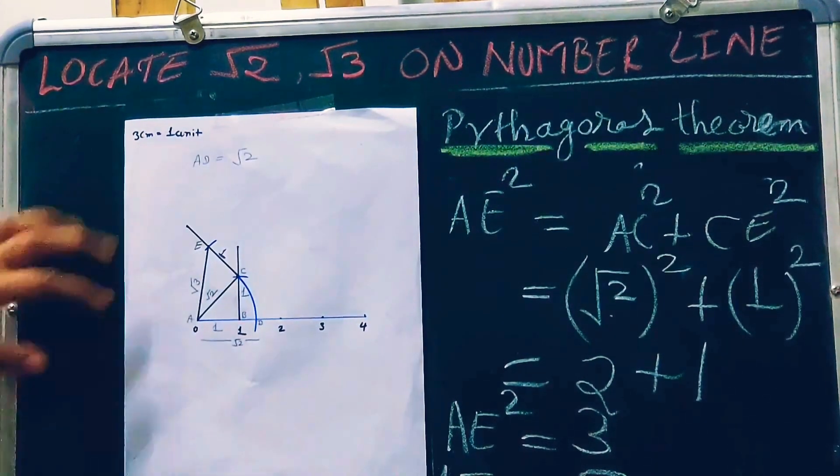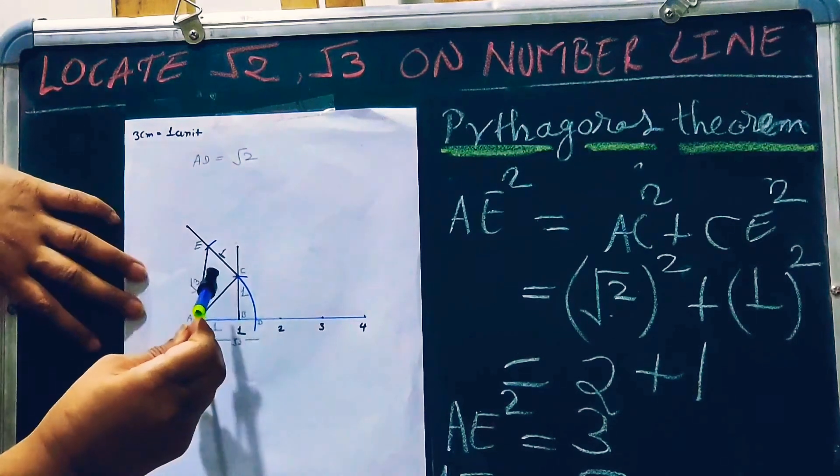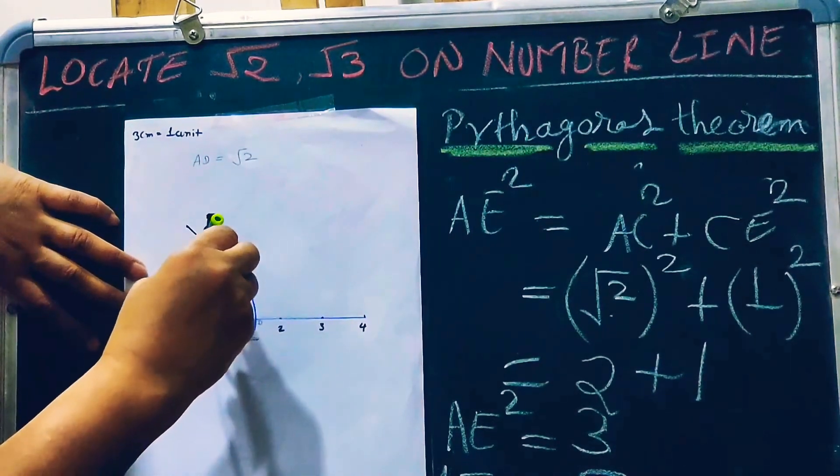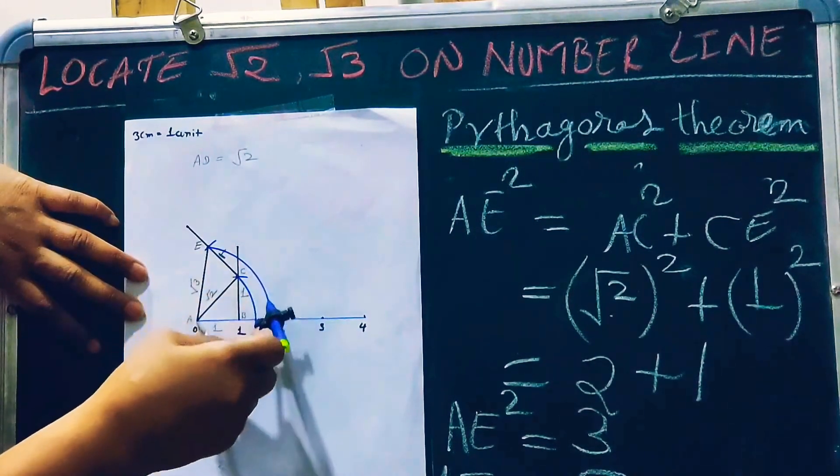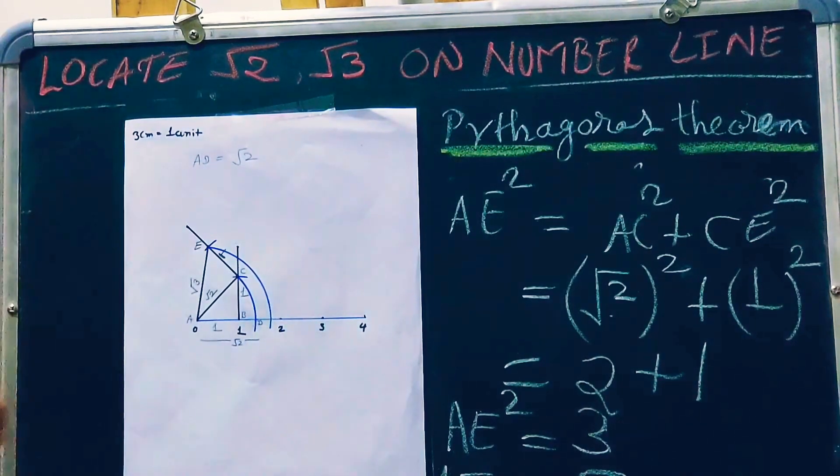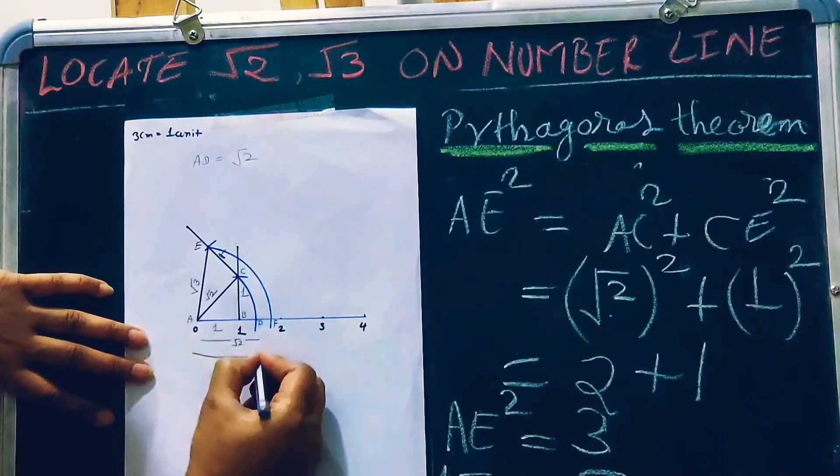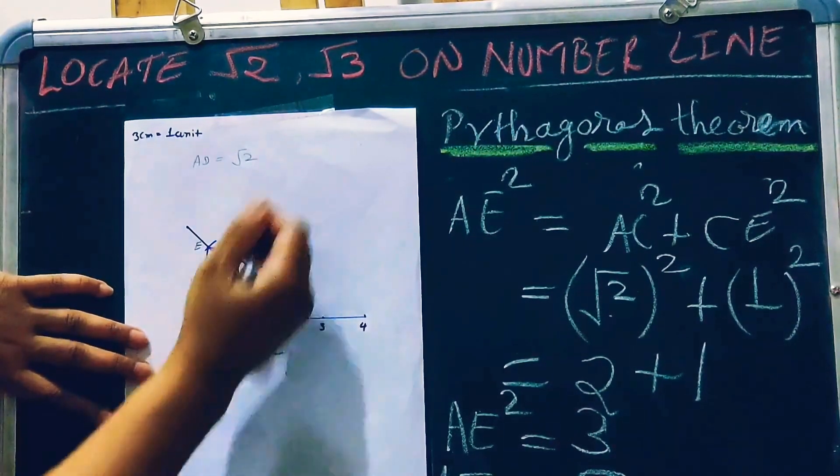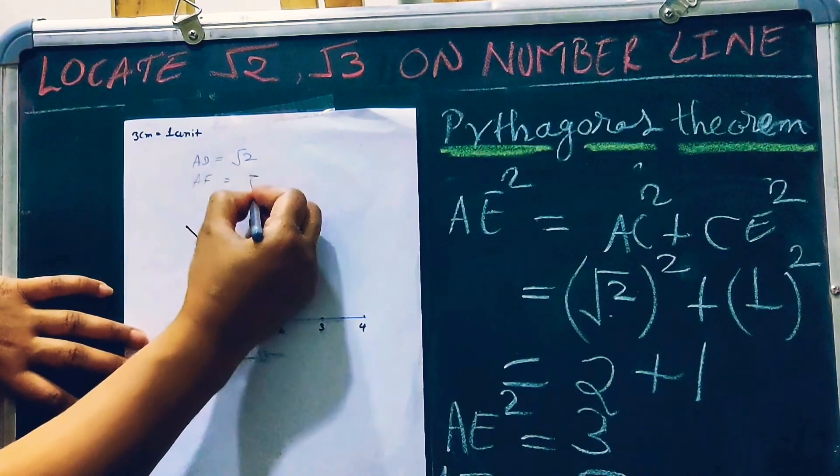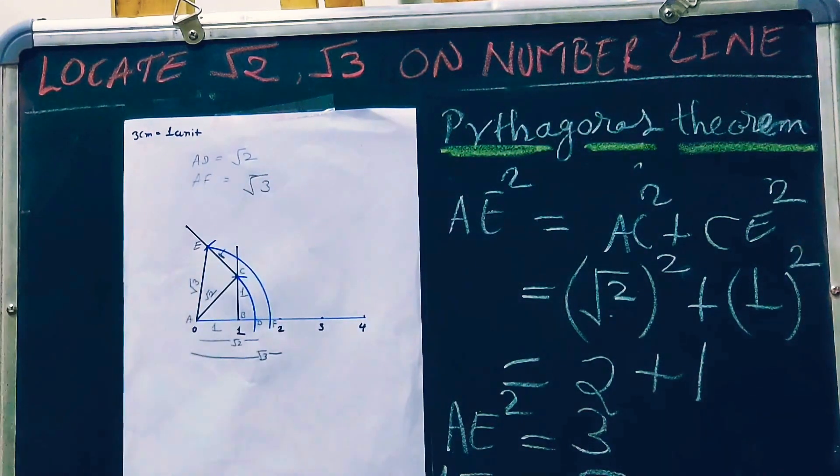But we have to mark this on the number line. So again we make an arc from this point which touches the number line here. If we mark this point as AF, our AF is equal to root 3. So let's see.